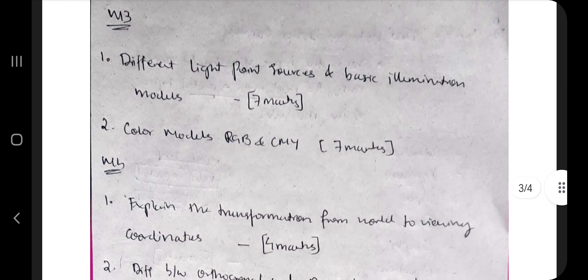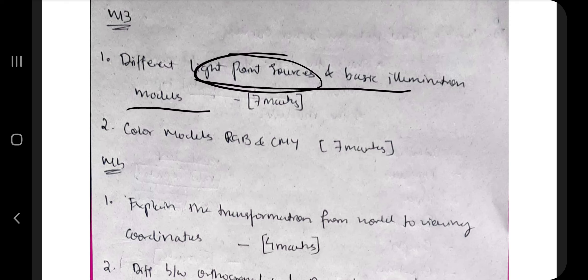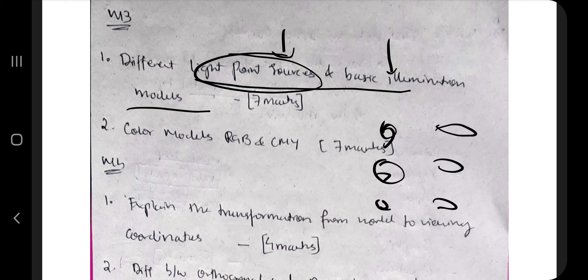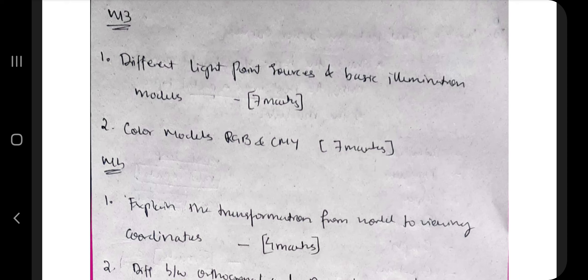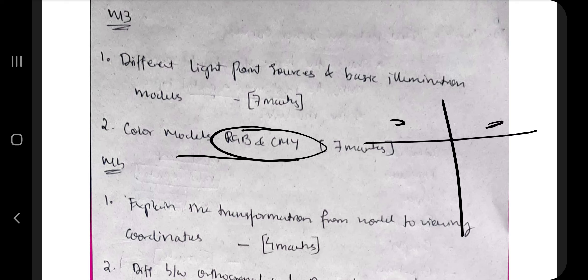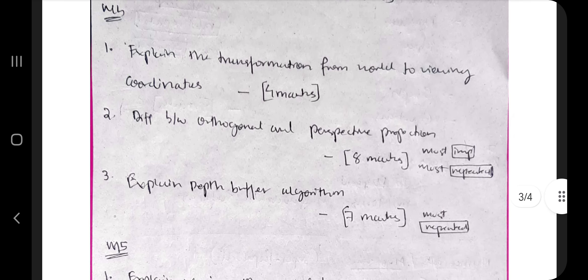Module 3 is mostly numerical, but there are two important theory parts that are most repeated. First, light point sources — there are three types. Second, basic illumination models — also three. Know all six concepts along with the definition and explanation of each. If this question comes you can easily get 7 marks. For RGB and CMY, there are some differences in a table I'll share in the solutions video — make sure you start learning from that now itself.